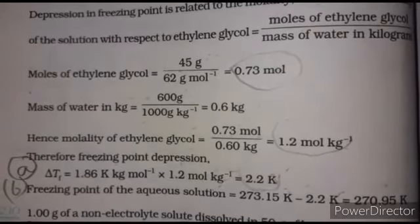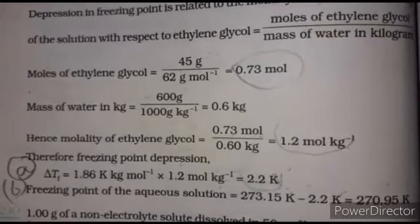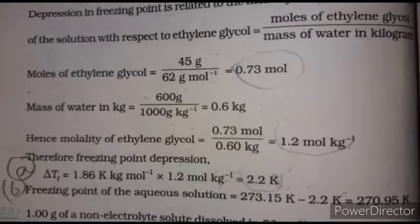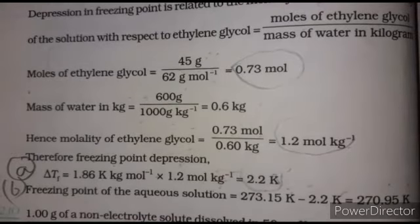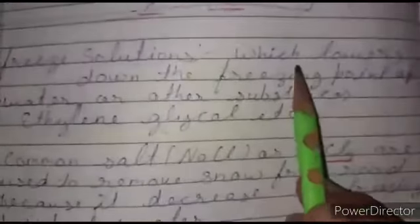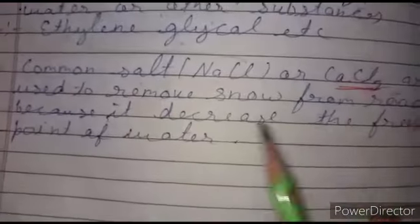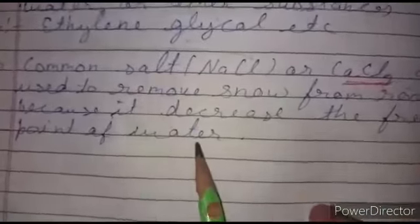Now, what are anti-freeze solutions? Anti-freeze solutions are those which lower the freezing point of water or other substances. For example, ethylene glycol is used as an anti-freeze. Common salt or calcium chloride are also used to remove snow from roads because they decrease the freezing point of water.